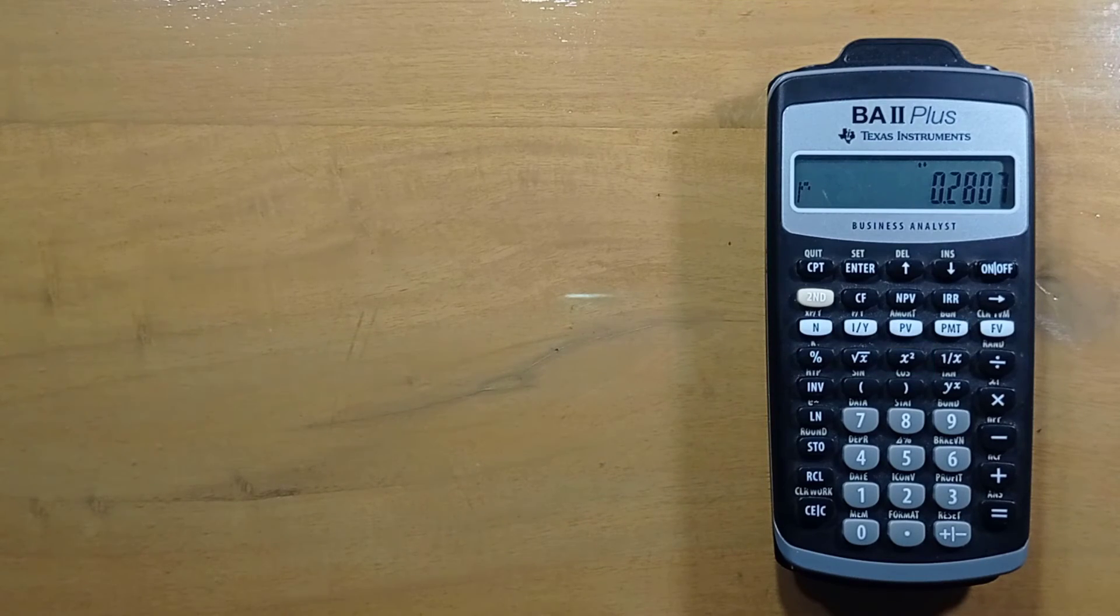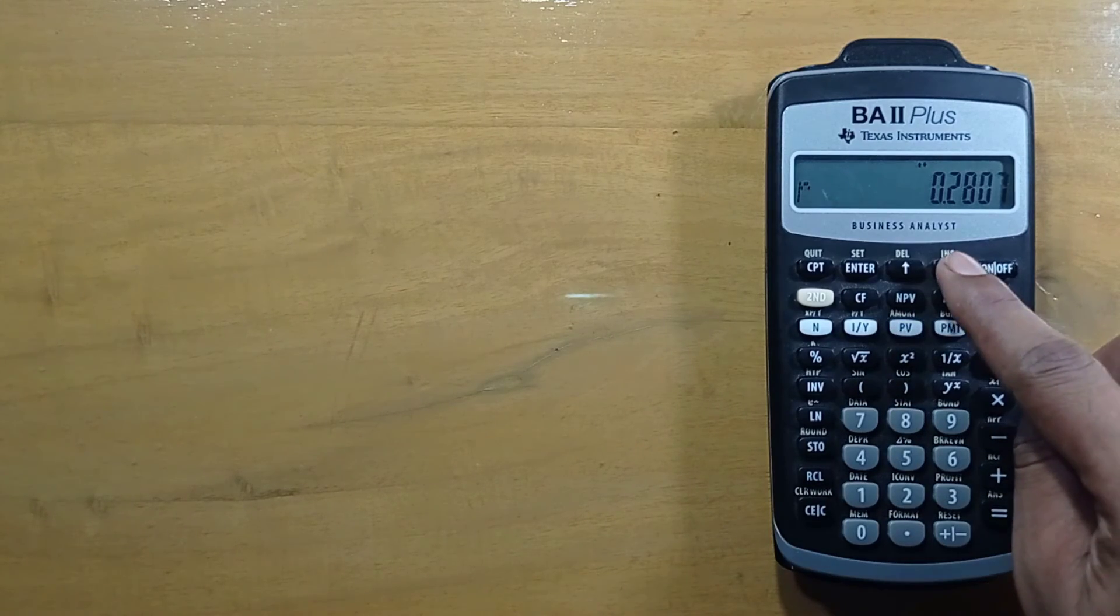We have 0.2807 as the coefficient of determination. It means 28.07 percent of the variation in y is explained by the variation in x.